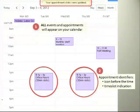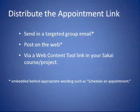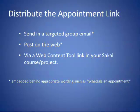And here they are — they appear right next to all of your regular events and appointments. Now distribute the appointment link. You can do it in several ways, including sending in a targeted group email, posted on the web, or via a web content tool link in your Sakai course or project.